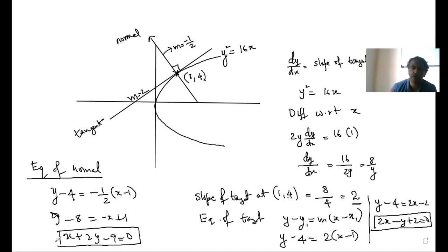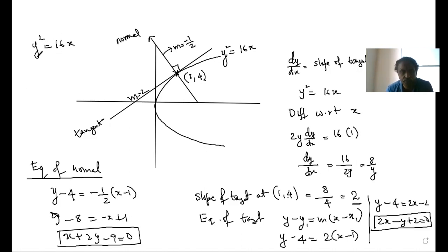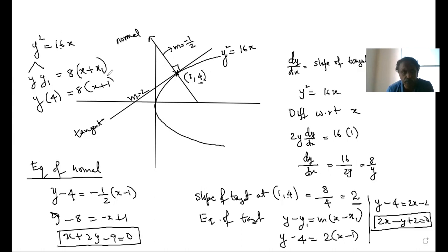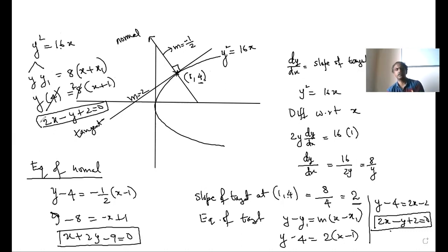Now this is the lengthy method — it can be adopted for any curve. But if you want to do this problem very fast, there is a simple shortcut method. For y squared equals 16x, write the tangent as y times y1 equals 8 times (x plus x1). This is a direct formula. The y-coordinate is 4, so y times 4 equals 8 times (x plus 1). Cancelling gives exactly the same answer: 2x minus y plus 2 equals 0. Once you know the tangent, you get the slope of the tangent and from there you can find the slope of the normal.